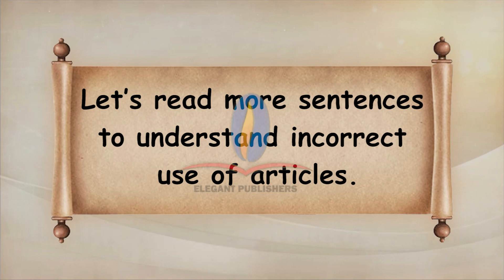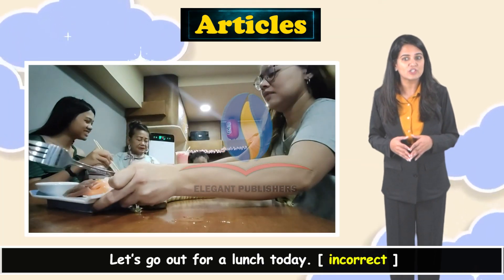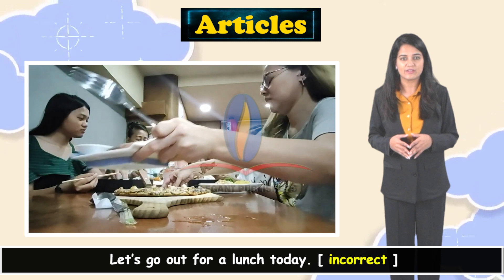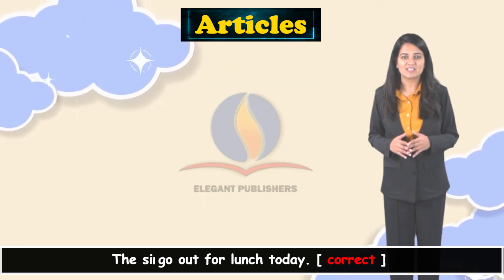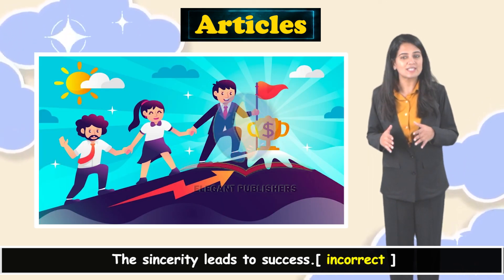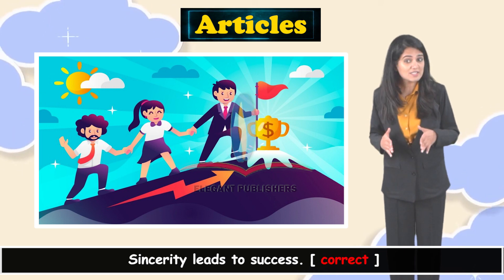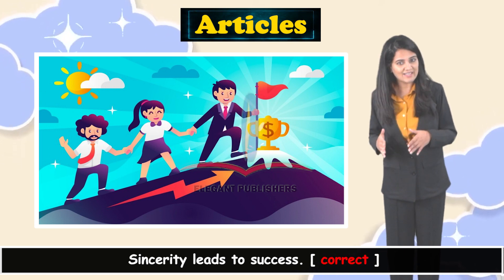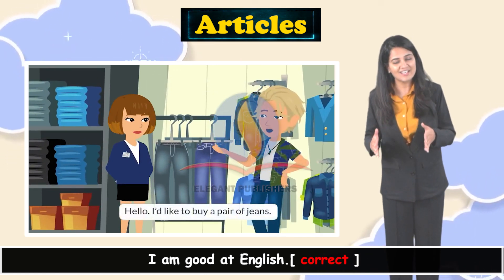Let's read more sentences to understand incorrect use of articles. 'Let's go out for a lunch today' — incorrect. 'Let's go out for lunch today' — correct. 'The sincerity leads to success' — incorrect. 'Sincerity leads to success' — correct. 'I am good at the English' — incorrect. 'I am good at English' — correct.